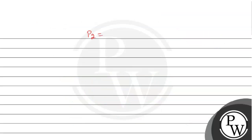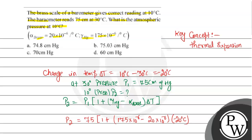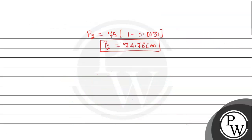If we solve the values, this will become P2 equals 75 into 1 minus 0.0031. Multiplying both values, this value will become 74.76 cm. So if the temperature is taken as 10 degree Celsius, in that case the pressure value will be 74.76 cm, and from the given options, taking the approximate value, this comes to 74.8 cm of mercury.